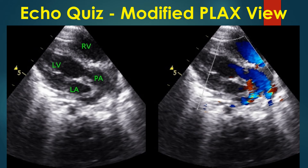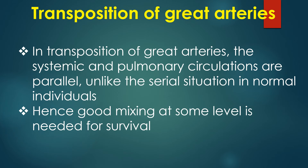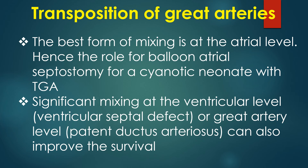Overall, the features were consistent with transposition of the great arteries. In transposition of great arteries, the systemic and pulmonary circulations are parallel, unlike the serial situation in normal individuals. Hence, good mixing at some level is needed for survival. The best form of mixing is at the atrial level, hence the role for balloon atrial septostomy for a cyanotic neonate with TGA. Significant mixing at the ventricular level or great artery level can also improve survival.